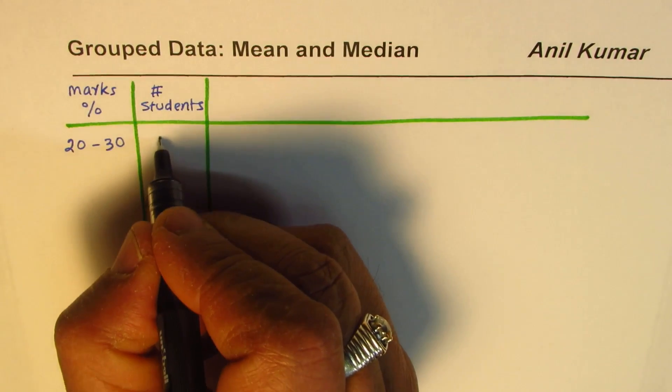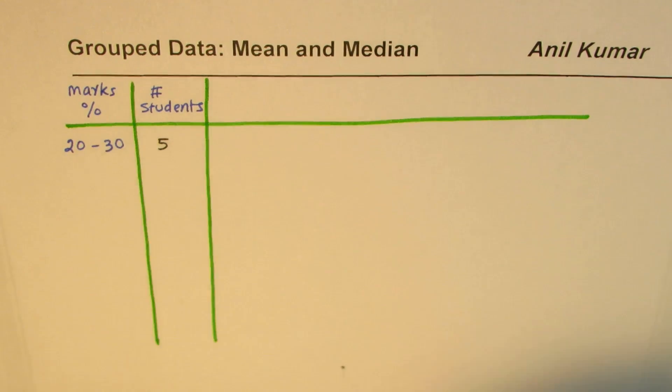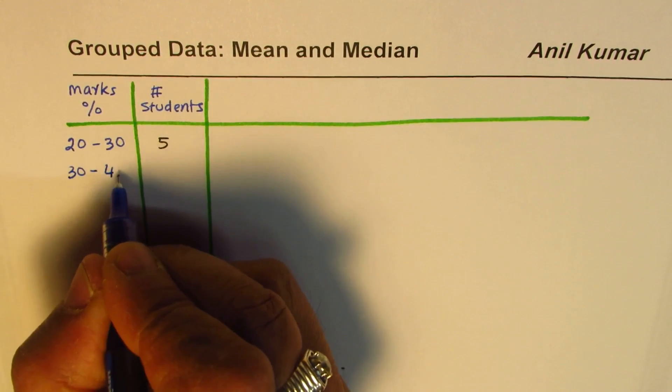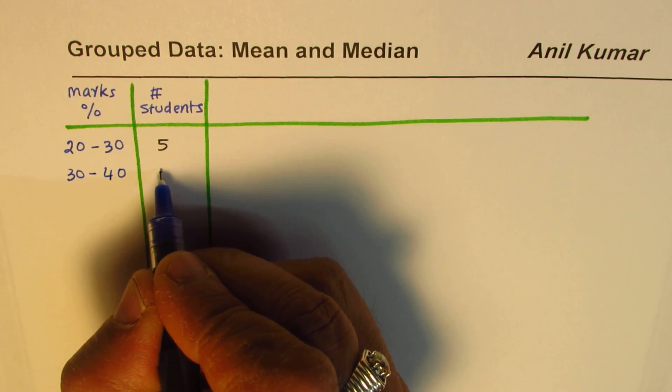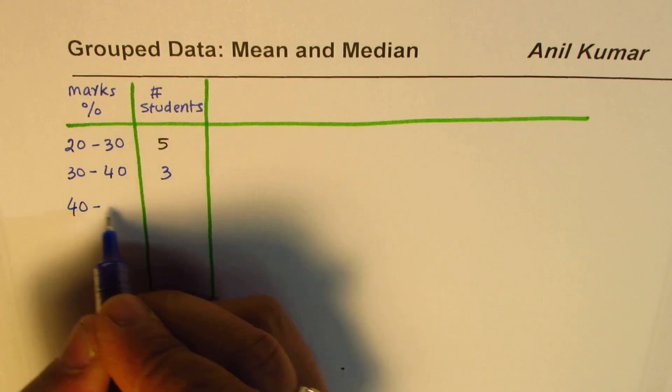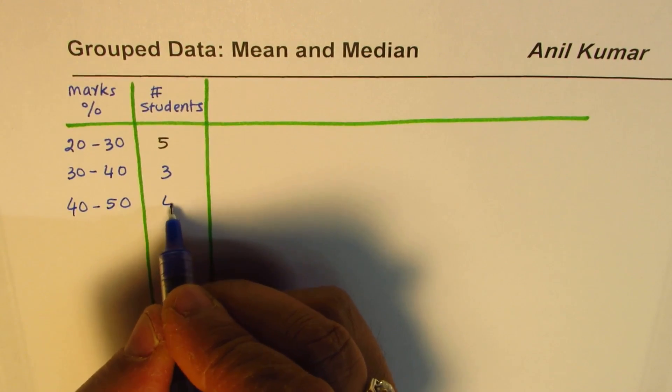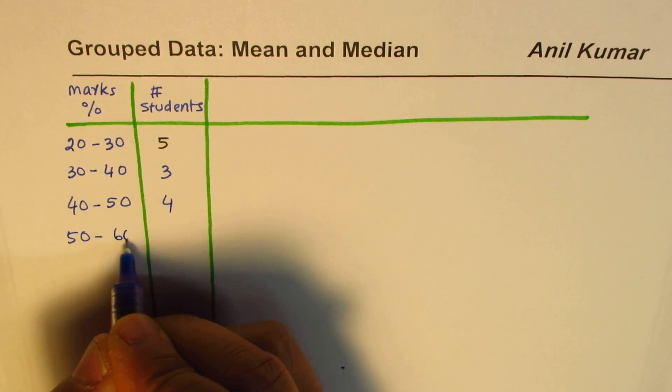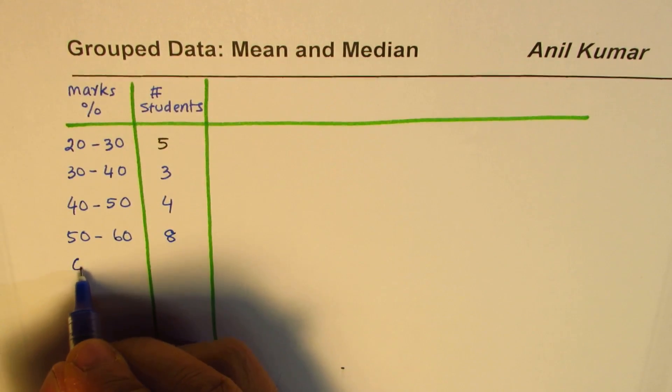From 30 to 40, the number of students were three. From 40 to 50, the students were four. From 50 to 60, the number of students who scored marks were eight.